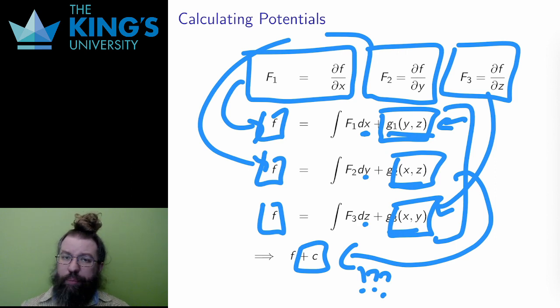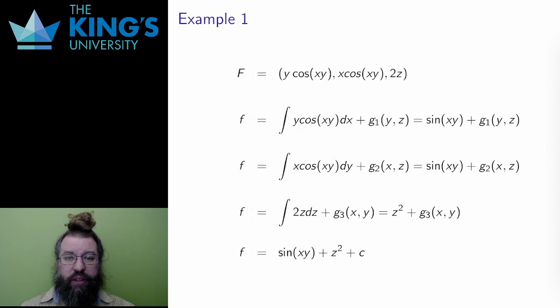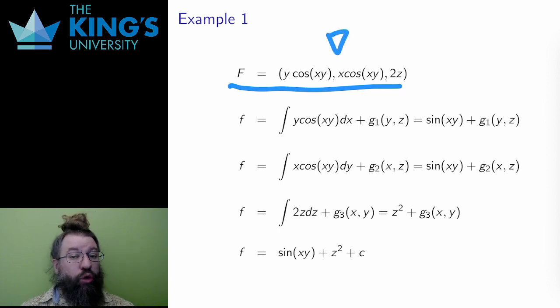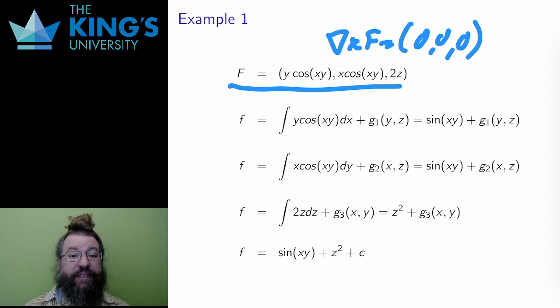Let me do an example. Here is a vector field. Its domain is all of R^3, and all of R^3 is simply connected. If you calculate the curl of this field, you will get the zero vector, so this is irrotational. Since it is irrotational on a simply connected open set, it is conservative. It has a potential. I'm going to try and find that potential.